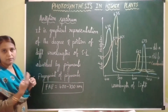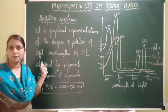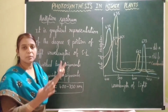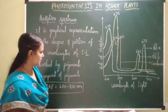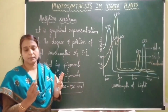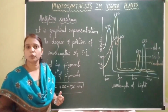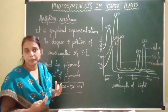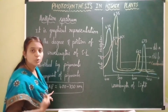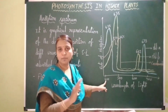A quick recap: absorption spectrum is the graphical representation of the degree and portion of different wavelengths of sunlight absorbed by different pigments — chlorophyll a, chlorophyll b, and carotenoids — the pigments present in higher plants involved in photosynthesis. Sunlight consists of three portions: UV rays, visible rays, and infrared rays. Visible rays are absorbed by green plants for photosynthesis, and that range — 400 to 700 nanometers — is called photosynthetically active radiation, PAR.